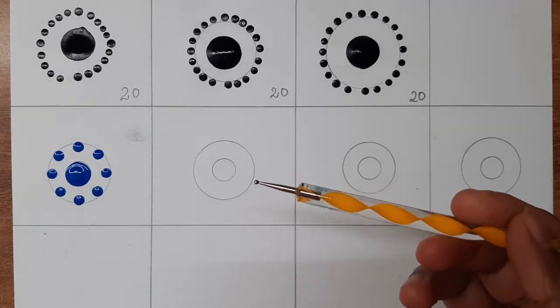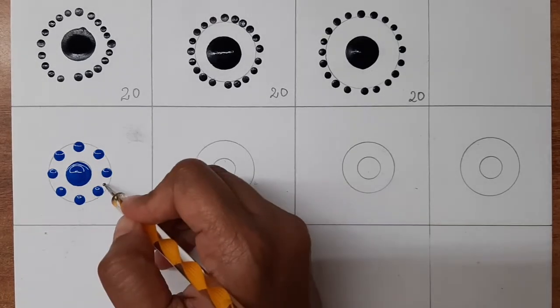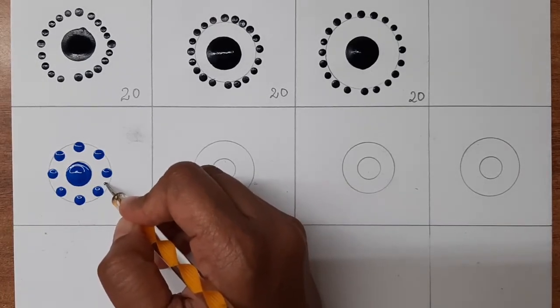This is the tool that I am talking about. So using this, I am going to keep two small dots in between.